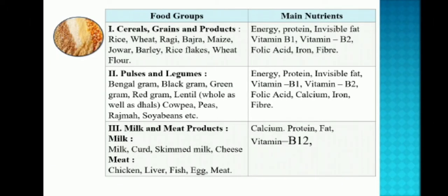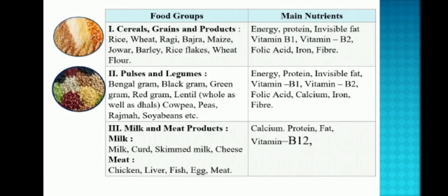Coming to the second group, pulses and legumes: Bengal gram, black gram, green gram, red gram, lentil, whole as well as dals, cowpea, peas, rajma, soybeans, etc. The nutrients contained are energy, protein, invisible fat, vitamin B1, vitamin B2, folic acid, calcium, iron, and fiber.